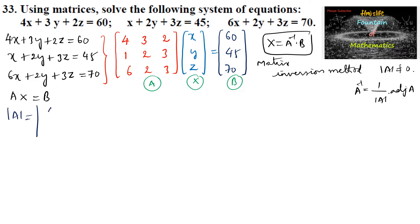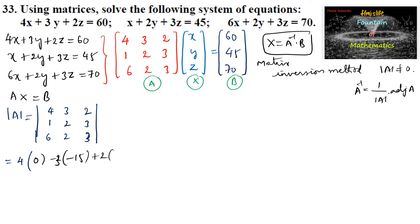Let us find the determinant of matrix A, which is the determinant of the coefficient matrix: 4, 3, 2 / 1, 2, 3 / 6, 2, 3. This equals 4 times (6 minus 6) minus 3 times (3 minus 18) plus 2 times (2 minus 12), giving 0 plus 45 minus 20, which equals 25, not equal to 0.